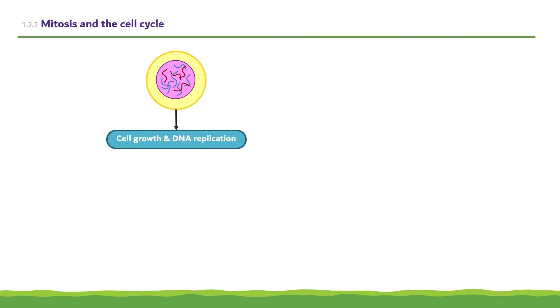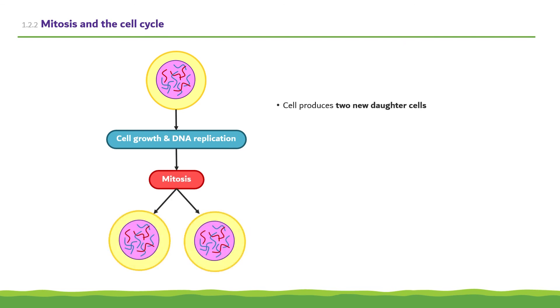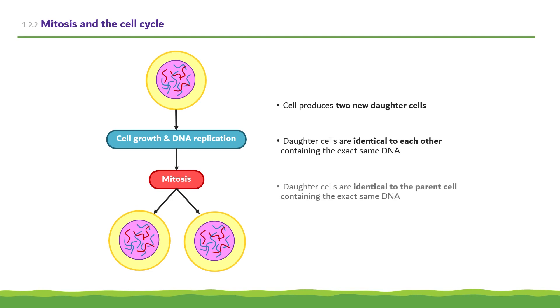In summary, the cell first undergoes cell growth and DNA replication, divides by the process of mitosis, ending up with two daughter cells being produced that are identical to each other, containing the exact same DNA, and also identical to the parent cell, again containing the same DNA.